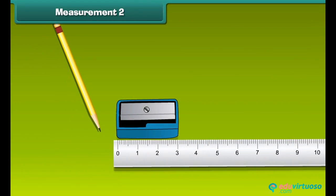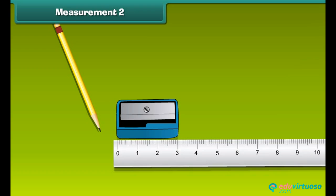Now let us measure a pencil sharpener. Place the sharpener near a scale so its one end is at zero. The other end of the sharpener is at three. Therefore, the length of this sharpener is three centimeters.